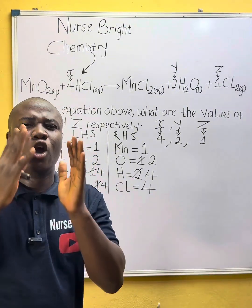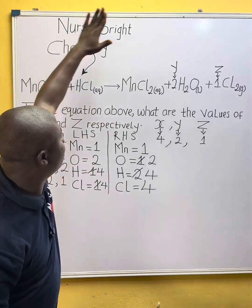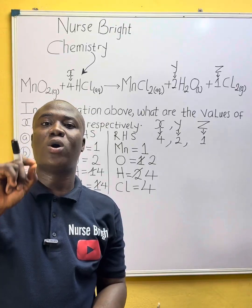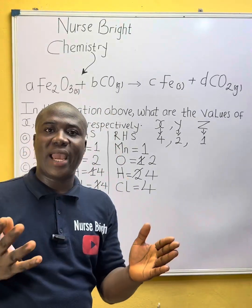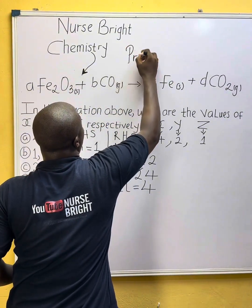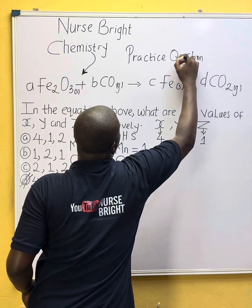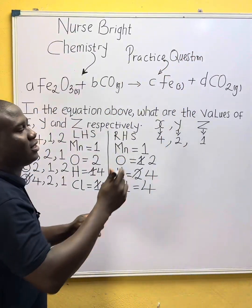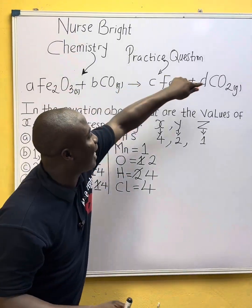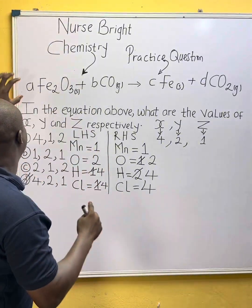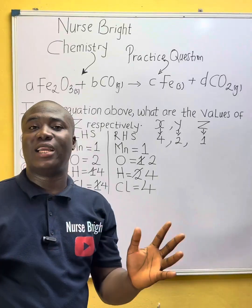Get ready for your own practice question — solve it and provide the answer in the comment section. For more understanding on this topic of how to balance chemical reactions, you can watch my full video lesson on my YouTube channel. This is your practice question: determine and balance the reaction, and tell me the values of A, B, C, and D — meaning what numbers should stand in front of these elements and compounds. It's very easy.